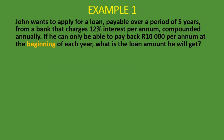Let's take a look at a few examples. This first example is the same one we did when we looked at the present value of an ordinary annuity, but the difference is that payments are made at the beginning of each year. John wants to apply for a loan payable over five years from a bank that charges 12% interest per annum, compounded annually. If he can only pay back 10,000 rand per annum at the beginning of each year, what is the loan amount he will get? We are looking for the present value, and we know it's an annuity due because payments are at the beginning of each year.